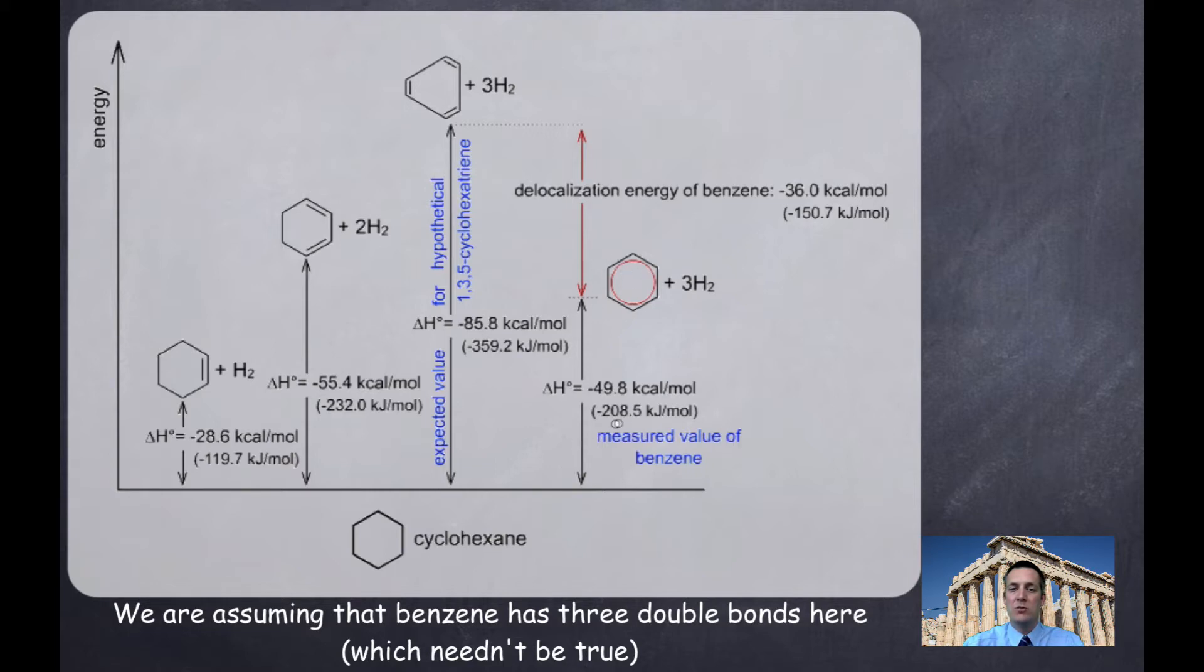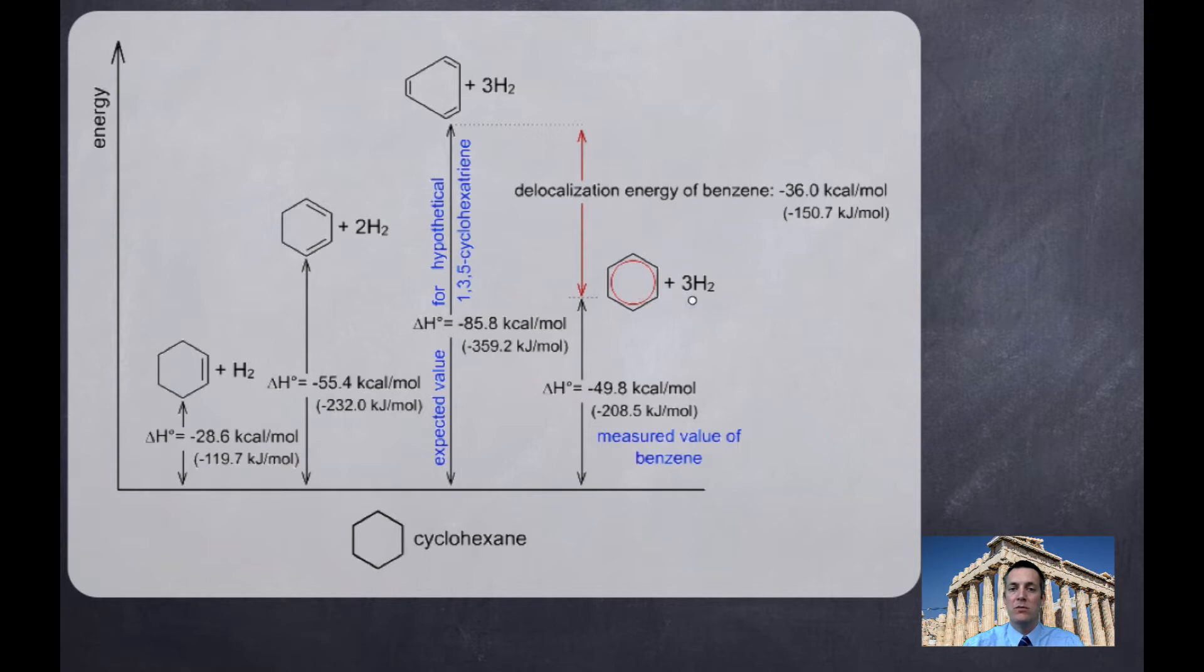This is the enthalpy change we actually measure when we use benzene and react it with three hydrogen molecules. And you can see that the enthalpy change is quite a lot smaller. So, in other words, benzene is quite a lot more stable than we would expect a molecule with three double bonds to be.